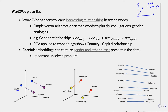You can even do simple arithmetic. If you take the vector for 'king', subtract the vector for 'man', and add the vector for 'woman', you arrive at coordinates very close to 'queen'. Similarly, there are relationships between words and tenses — like 'walking' to 'walked', or 'swimming' to 'swam', mapping current to past tense.